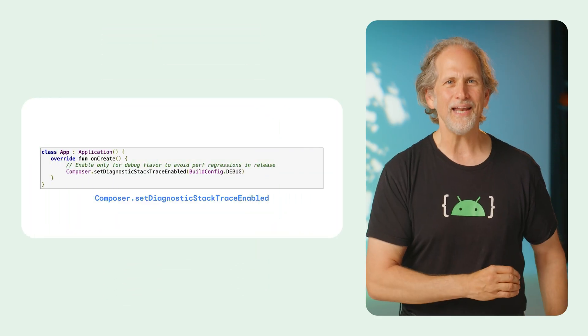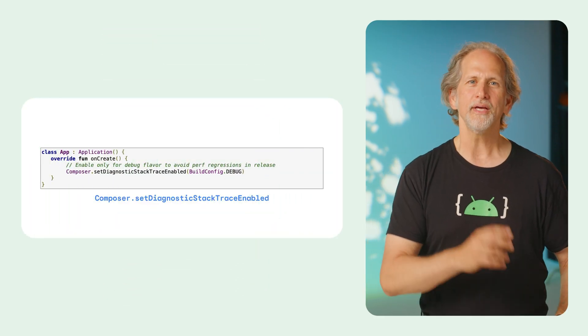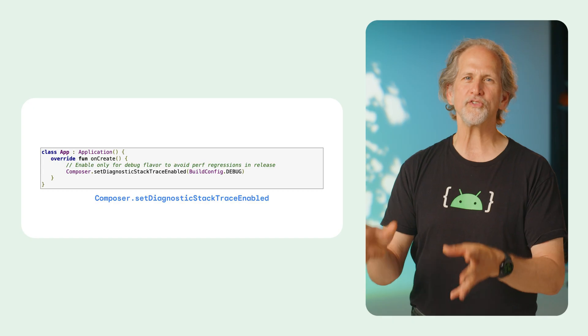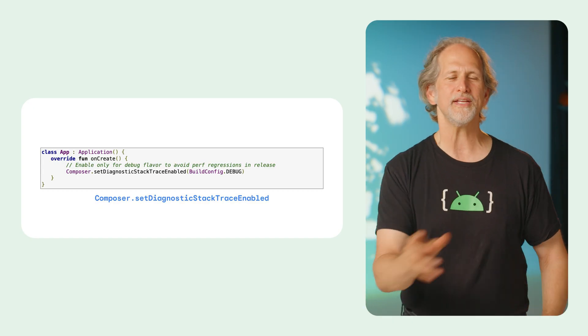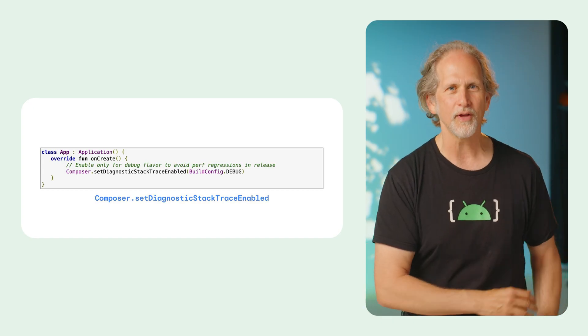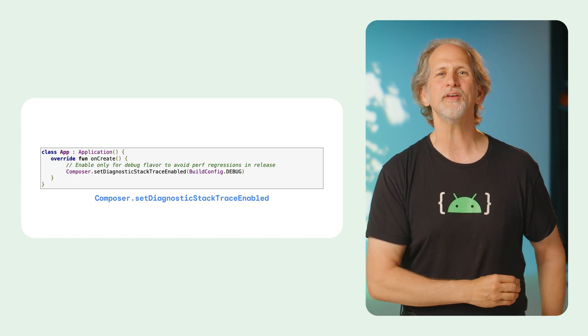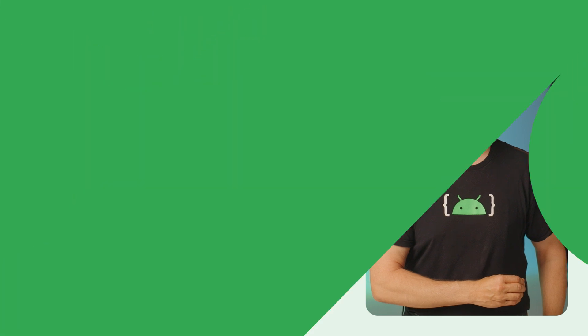Compose 1.9 also includes bug fixes and new features to improve scroll and nested scroll views interop, Composer.setDiagnosticStackTraceEnabled to help provide richer crash location details in stack traces in your debug builds, new annotations, lint checks, and more.